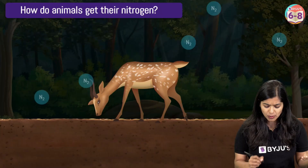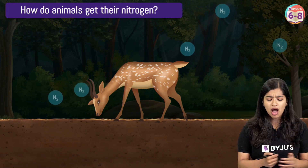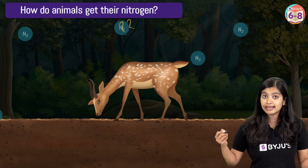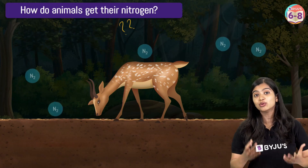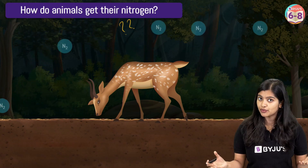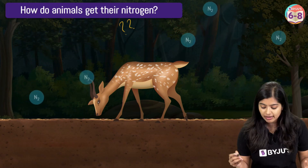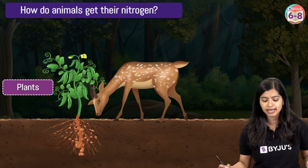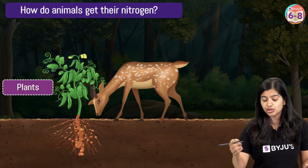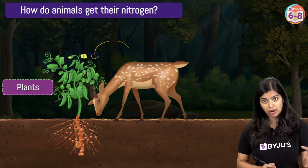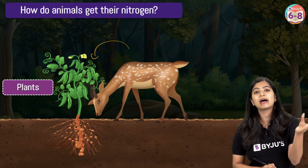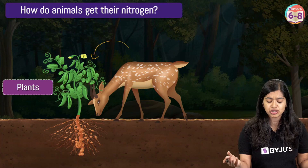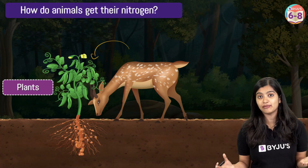When we talk about animals — how do animals get their nitrogen? Animals also cannot utilize atmospheric or gaseous nitrogen. Rather, they are dependent on other organisms. Most of their nitrogen requirement comes from either eating plants or by eating other animals. So they are not utilizing the gaseous nitrogen directly in any way.